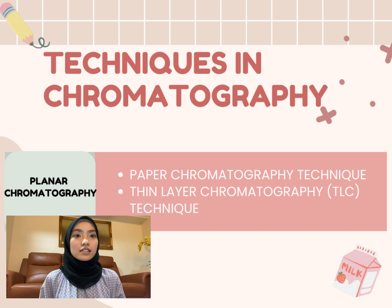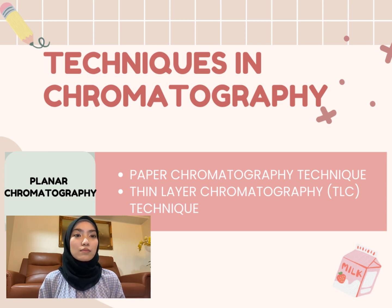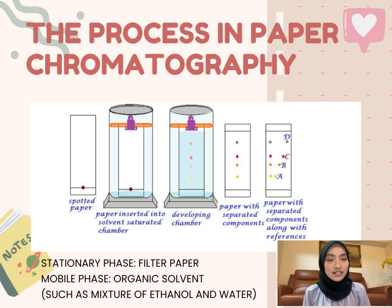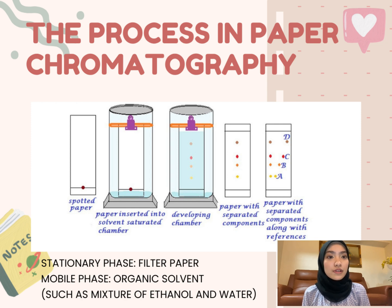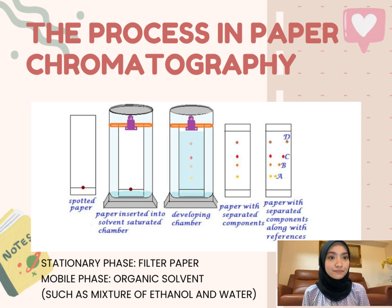Techniques in chromatography: planar chromatography is divided into two techniques, namely paper chromatography and thin layer chromatography (TLC). In the paper chromatography technique, a sample is spotted using a capillary tube on a line drawn on the filter paper. The paper is then inserted into a solvent-saturated chamber. Make sure the paper is dipped into the development solvent and does not exceed the line that has been drawn. The solvent will carry various spots upward, with separated components moving at different rates. The stationary phase in this technique is filter paper, while the mobile phase is organic solvent.